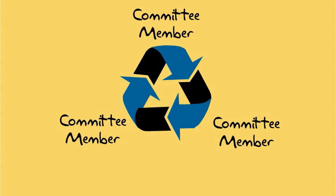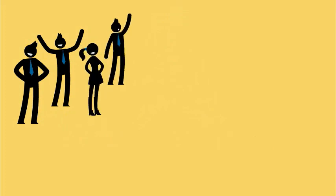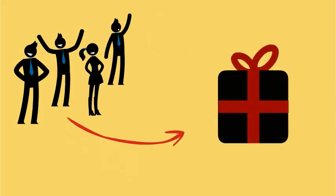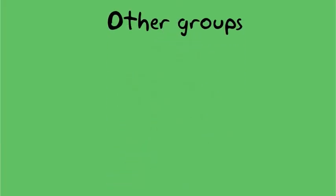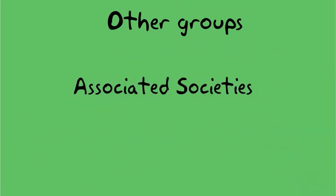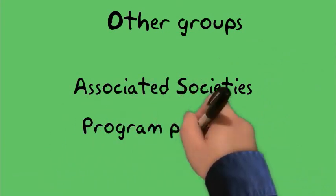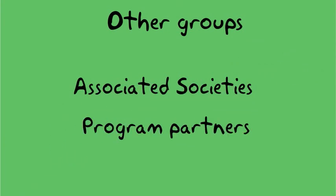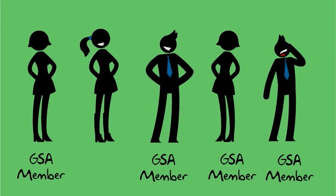For example, people on the Education Committee are often asked to be involved in some of the award committees, like the Public Service Award Committee. Finally, we should mention that GSA works with other groups. GSA has formal relationships with other societies — we call these associated societies — and also works with partners on other programs. Sometimes, representatives of these groups will be members or guests attending GSA committee meetings.